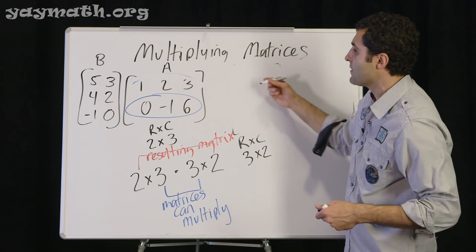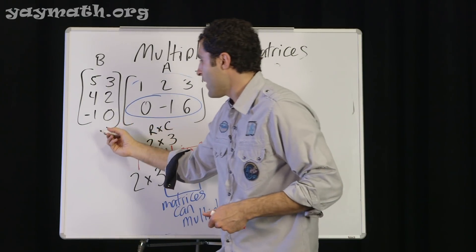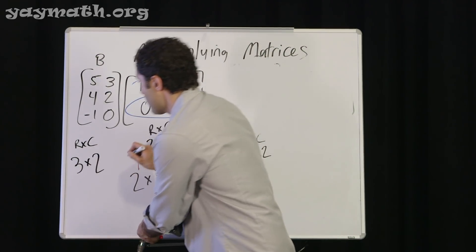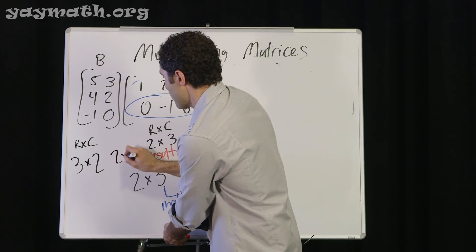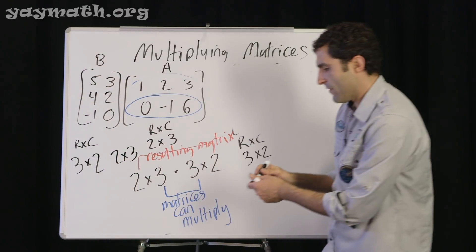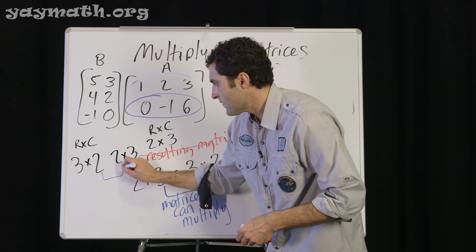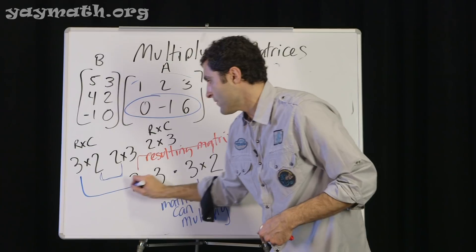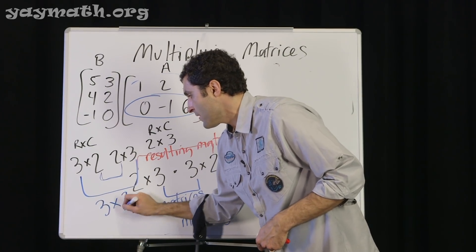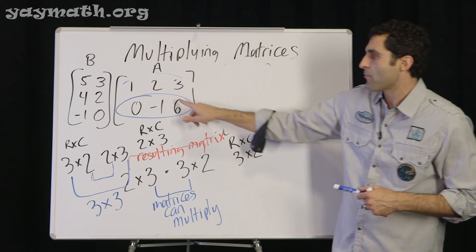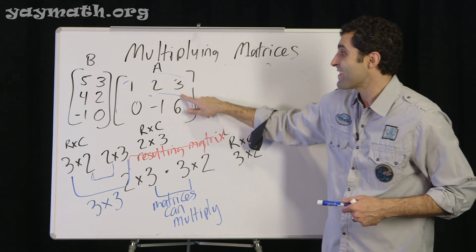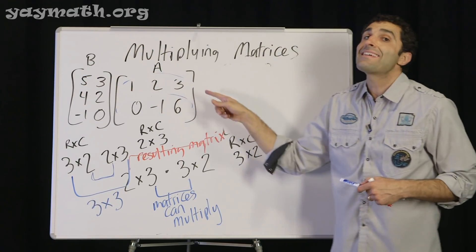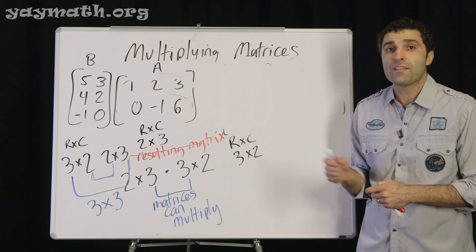Now to be clear, we're talking about rows by columns, 3 rows, 2 columns, and then 2 rows, 3 columns. Check that out. These two matrices can be multiplied. And the result are these two. So the answer will actually be a 3 by 3. We're not going to go through the entire thing. I'll just give you a piece of that process.